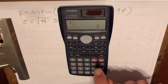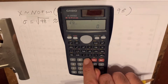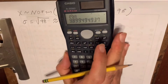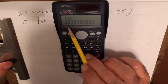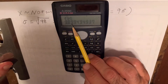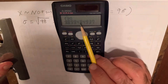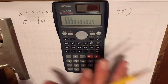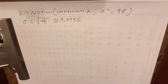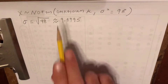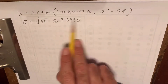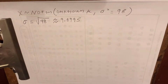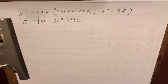The square root of 98 is 9.8995 — the 4 gets rounded up to 5. The reason I'm rounding to the nearest ten-thousandth is to make sure my answer has a reasonable amount of precision.